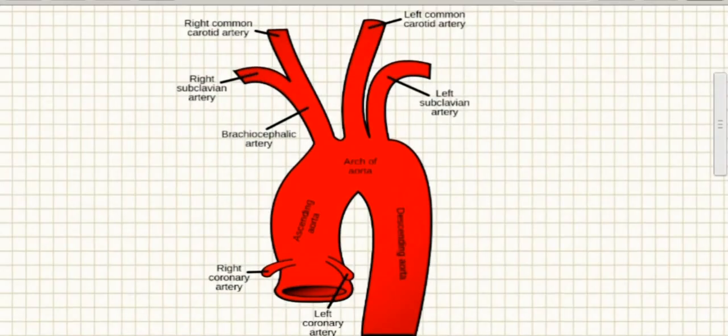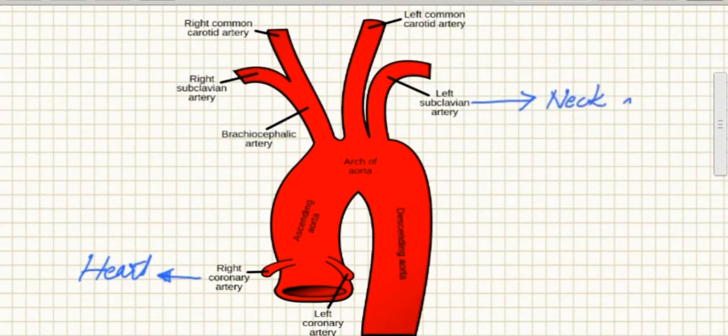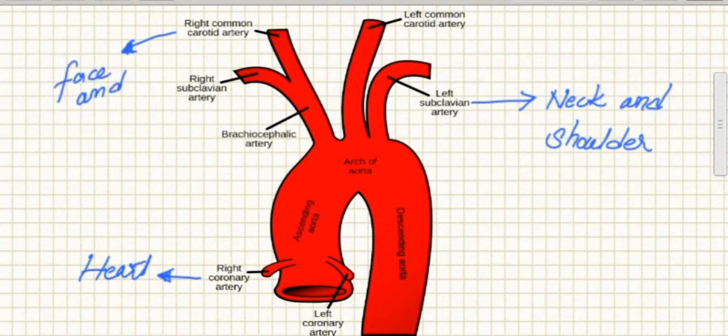The first artery given by ascending aorta is coronary artery which supplies blood to heart. Arc of aorta has left and right subclavian artery which supplies blood to neck and shoulder. Carotid artery, left and right, provides blood to face and head.